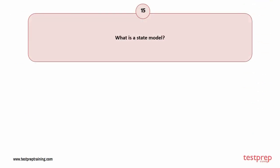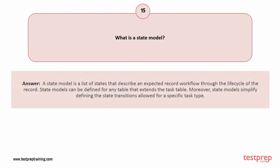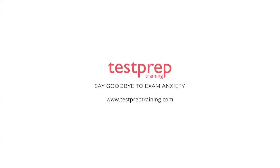Question number 15: What is a state model? A state model is a list of states that describe an expected record workflow through the life cycle of the record. State models can be defined for any table that extends the task table. Moreover, state models simplify defining the state transitions allowed for a specific task type. For more such videos, subscribe to our channel.